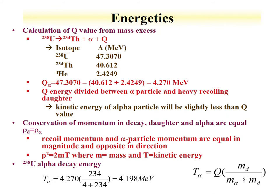We can use these calculations to evaluate Q values for reactions. As an example, if we want to evaluate the Q value of the decay of uranium-238 to thorium-234 plus an alpha, we get the mass excesses of uranium-238, thorium-234, and an alpha particle and arrange the equation. We find the Q value is 4.27 MeV. Then we plug into our equation to calculate the alpha decay energy and find it is 4.198 MeV.